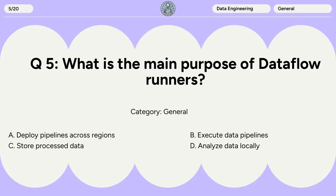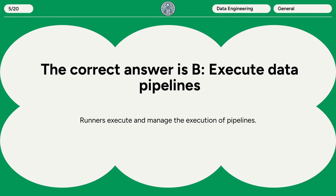Question 5: What is the main purpose of Dataflow runners? A. Deploy pipelines across regions. B. Execute data pipelines. C. Store processed data. D. Analyze data locally. The correct answer is B. Execute data pipelines. Runners execute and manage the execution of pipelines.